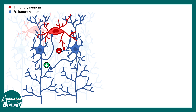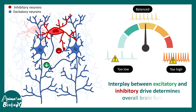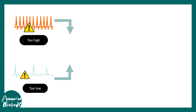These components of the circuits are really important to maintain the excitatory versus inhibitory balance. This mechanism allows the neuronal circuit to ensure activity is not too low or not too high. The interplay between excitatory and inhibitory drive determines overall brain function, and this balance goes off in epilepsy.